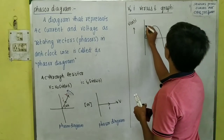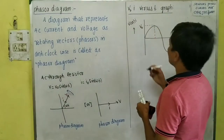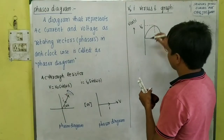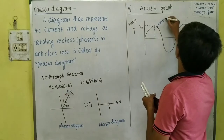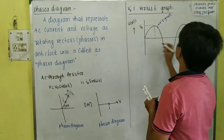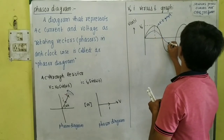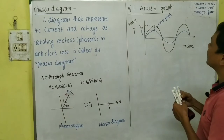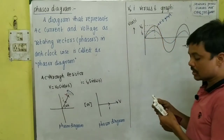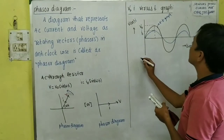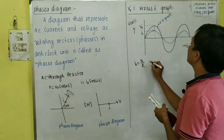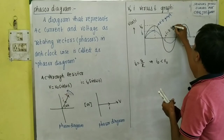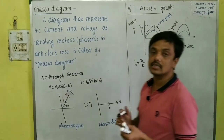If you draw the current versus time graph, you get a similar sine wave with the same phase. The peak value of current is I₀, which is less than the peak voltage V₀ because I₀ = V₀/R, meaning I₀ must be less than V₀. This is the I-t graph — current versus time graph for AC through a resistor.